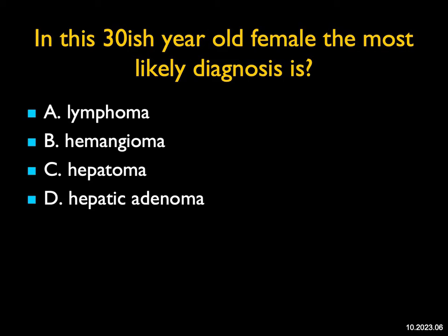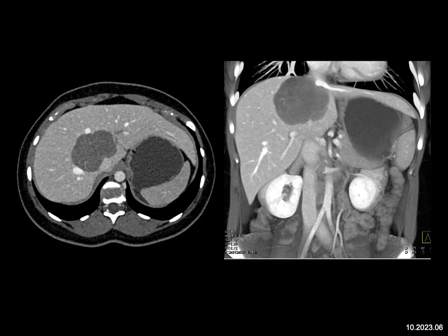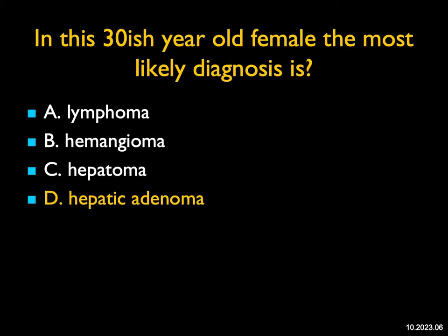In this 30-year-old female, the most likely diagnosis — I'm seeing a hypovascular mass. I only have one phase; this is venous phase. There's no significant distortion of the vessels and no underlying cirrhosis. Lymphoma can involve the liver, but usually it's multifocal and more solid. Hemangioma has peripheral enhancement. Hepatomas are solid with regular enhancement — 85% are hypervascular. Hepatic adenomas are typically vascular but can also be relatively hypovascular and are usually well defined. This was a most unusual case — hepatic adenoma — mainly because the other three just wouldn't be the right answer.